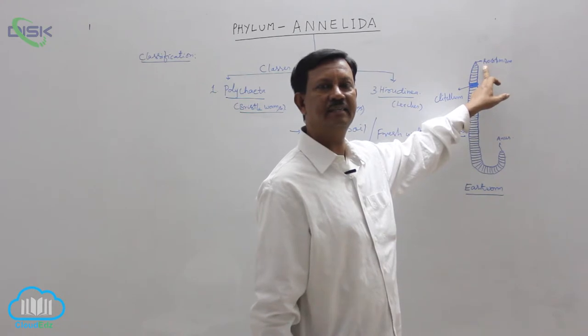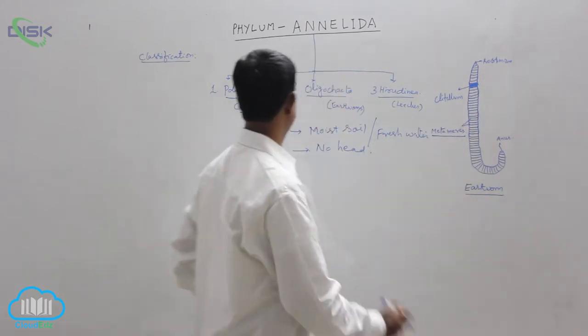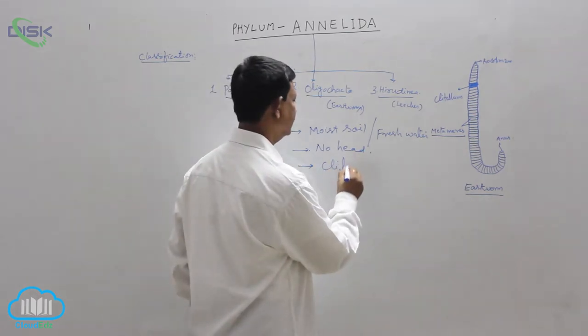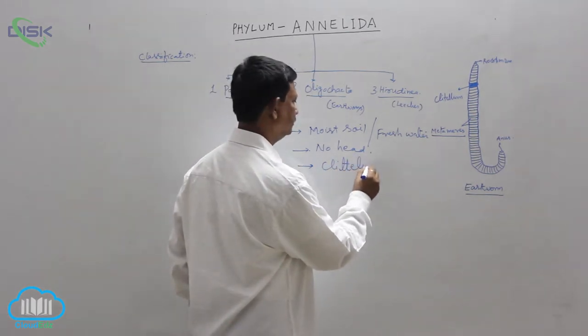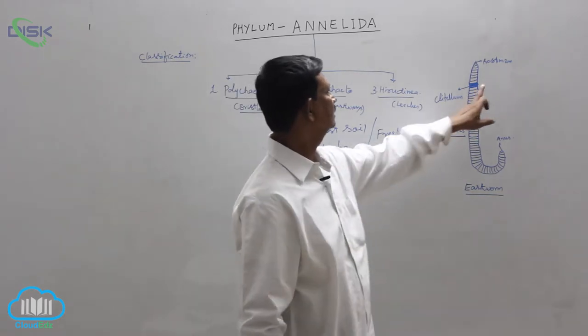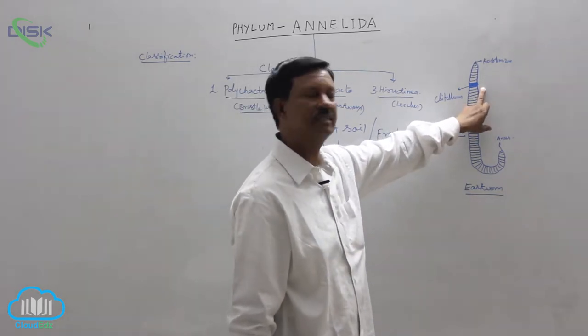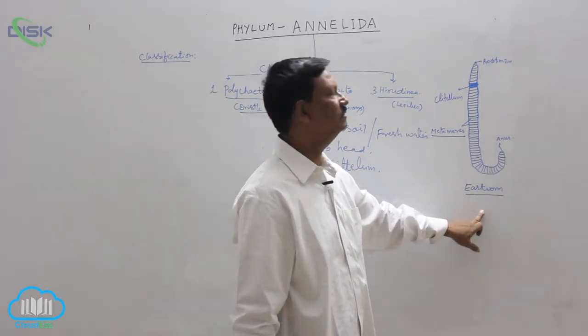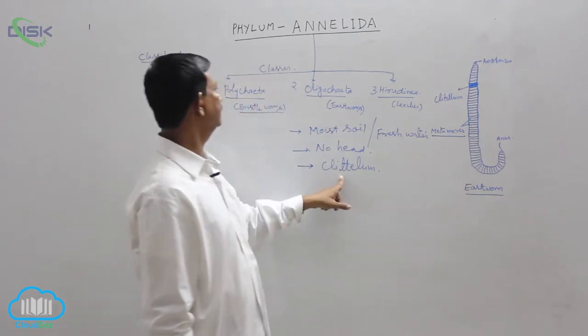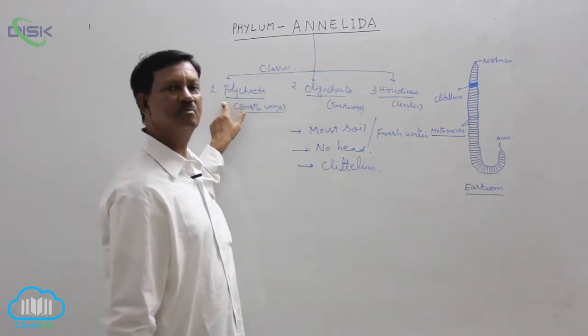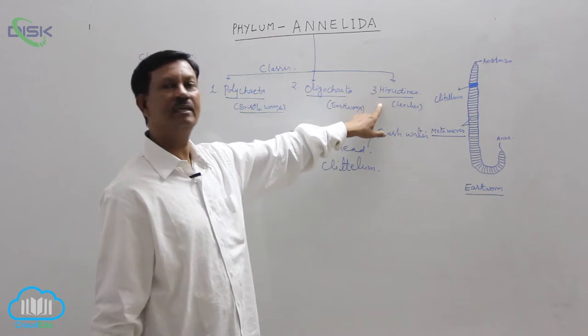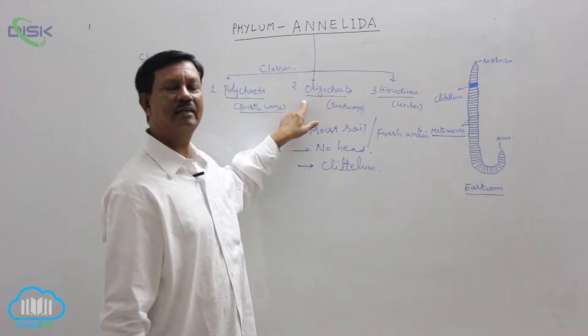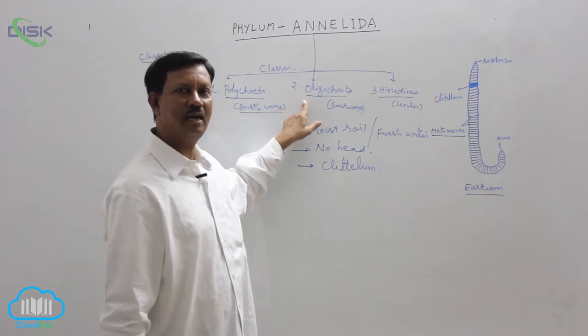Clitellum is a special girdle-like structure present here. In the 14th, 15th, 16th segments in earthworm, it forms into a thick girdle-like structure which is known as the clitellum, which is present in this phylum only. Clitellum is absent in Polychaeta and in Hirudinea. Clitellum is present only during breeding season, but in Oligochaeta, clitellum is present throughout their life.